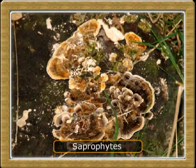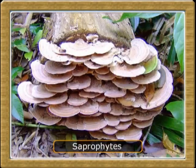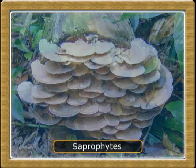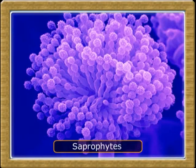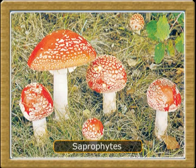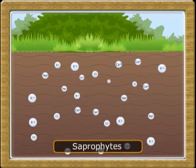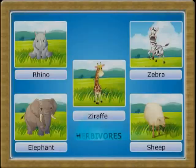Heterotrophic fungi and bacteria are termed as saprophytes as they procure nutrients from dead and decaying plants and animals. They decompose and degrade complex molecules into simple molecules and absorb them through their body surface. In this process, they add a number of nutrients to water and soil.